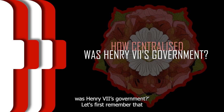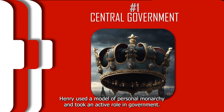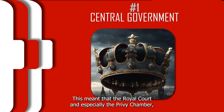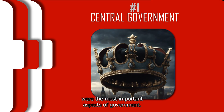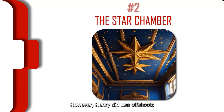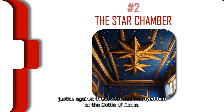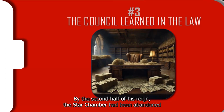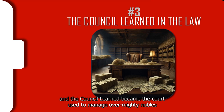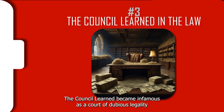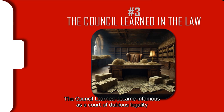Let's return to our overarching question of how centralised was Henry VII's government. Henry used a model of personal monarchy and took an active role in government, meaning the Royal Court and especially the Privy Chamber were the most important aspects of government. However, Henry did use offshoots of the Royal Court to administer both finance and justice. In 1487 he created the Star Chamber to administer justice against those who had betrayed him at the Battle of Stoke. By the second half of his reign the Star Chamber had been abandoned, and the Council Learned became the court used to manage overmighty nobles. Under Edmund Dudley and his deputy Richard Empson, the Council Learned became infamous as a court of dubious legality that issued severe fines to misbehaving noblemen.